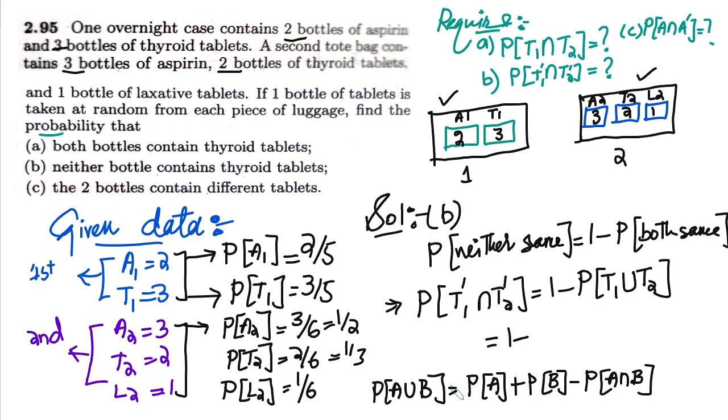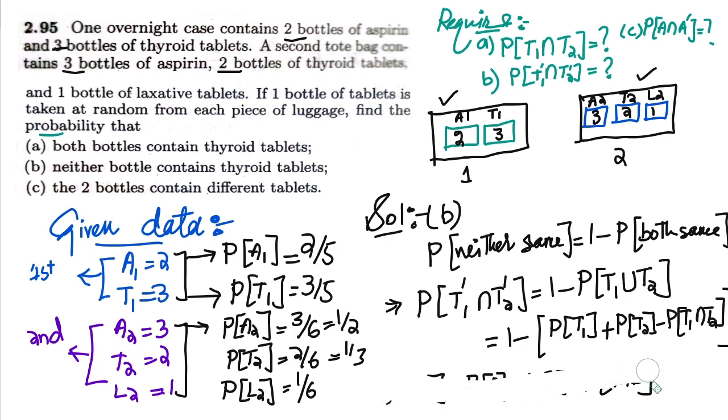Now putting or applying the same rule here, what would I get? I would get here probability of T1 plus the probability of T2 minus probability of T1 and T2. These are the probabilities which I have to find out.